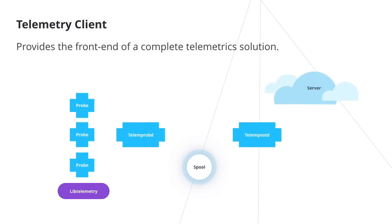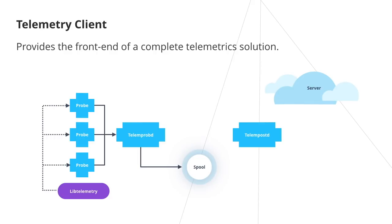The telemetry client provides the front end of the complete telemetrics solution. It consists of probes that collect specific types of data from the operating system and applications, LibTelemetry — a C library that probes use to create telemetrics records and send them to the telemd daemon for further processing — and telemd, a system daemon that manages receiving records from client probes, filling in record header information, and spooling the records ready to be sent to the backend server.